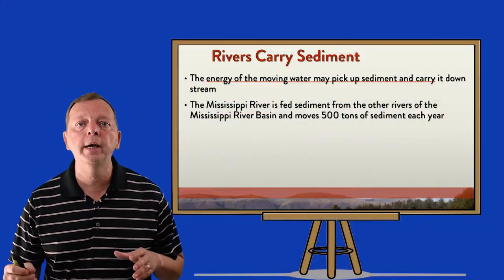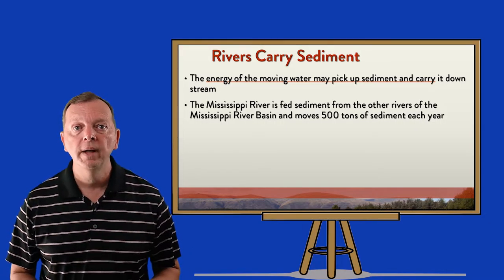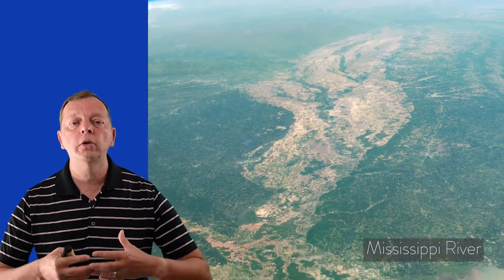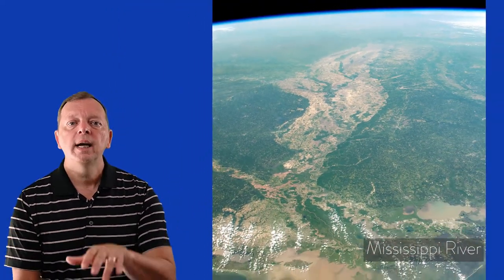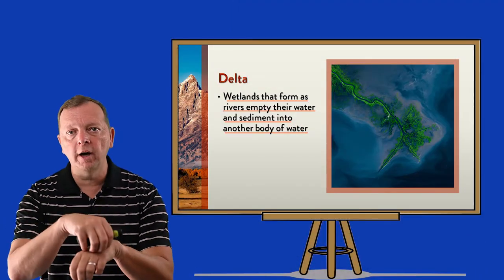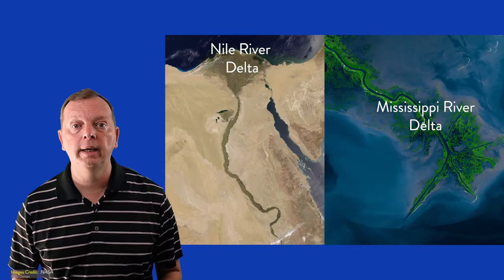When rivers flow, they pick up loose soil and rock called sediment and carry it downstream — again, an example of erosion. With all the rivers of a basin flowing into one river, tons and tons of sediment are moved by water. The Mississippi River alone carries 500 tons of sediment downriver each year. Once the river exits into a larger body of water such as the Gulf of Mexico, the water slows down, loses energy, and starts to deposit its sediment. This sediment builds up and begins to create a landform known as a delta, such as the Mississippi Delta or the Nile Delta in Egypt.